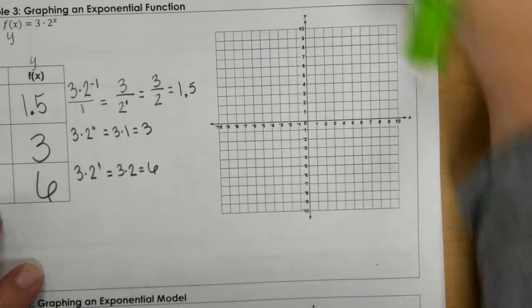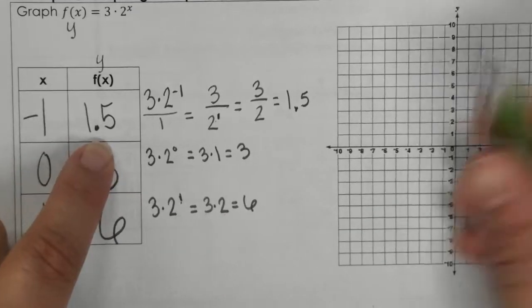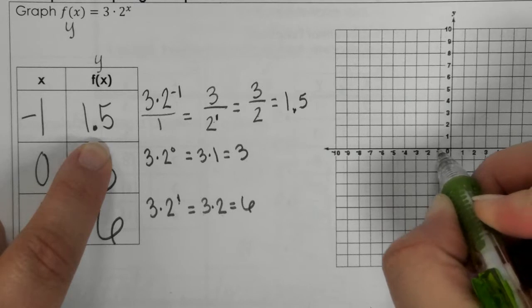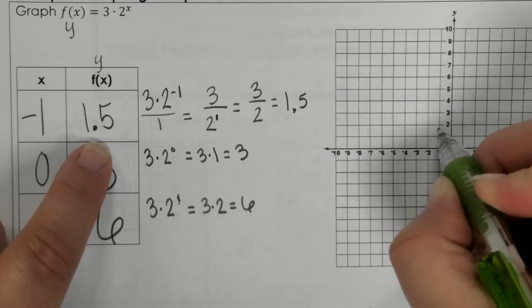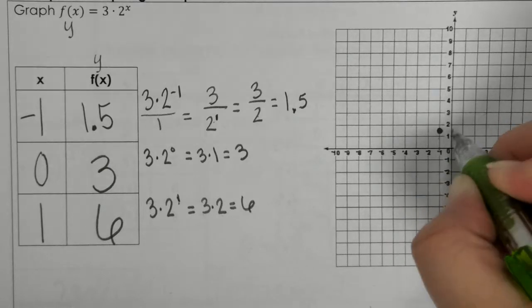So, that first one, negative 1, 1.5. We go negative 1, up 1 and a half, so we land right here, halfway between 1 and 2.